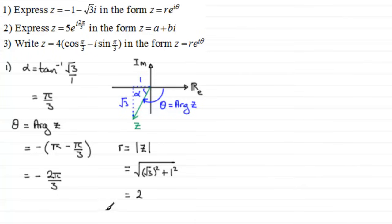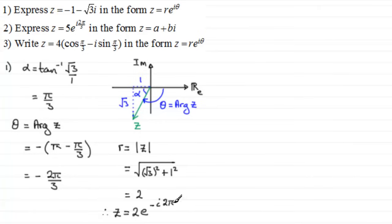Therefore z equals r, which is 2, times e^(iθ), where theta is minus 2π/3. So z equals 2e^(−i·2π/3). That's the exponential form of z equals minus one minus root three i. We'll move on now to question two.